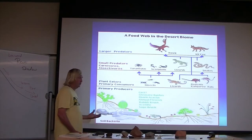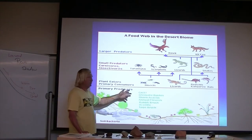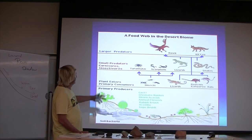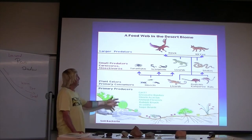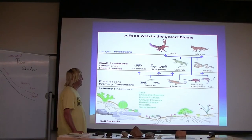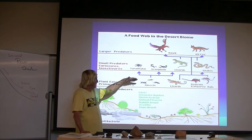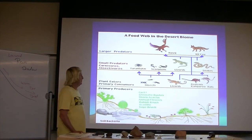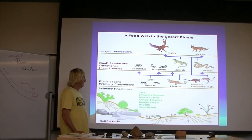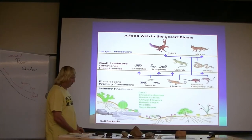Deserts have ecosystems with primary producers — the plants — then primary consumers like insects, then lizards eating insects as secondary carnivores, and at the very top large predators like hawks and kit foxes. This hierarchy is much like any other ecosystem. Deserts are basically similar to other ecosystems, just adapted to harsher environments.